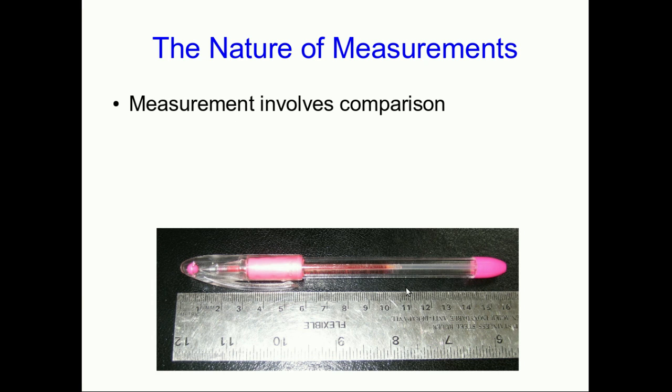Every measurement we do involves some sort of a comparison. For example, in the everyday example of just measuring something like this pen and measuring its length, you're comparing the length of the pen with lengths marked off on a ruler. You could, of course, compare it instead with finger widths. You could count your own finger widths along the pen, and that's also a measurement.